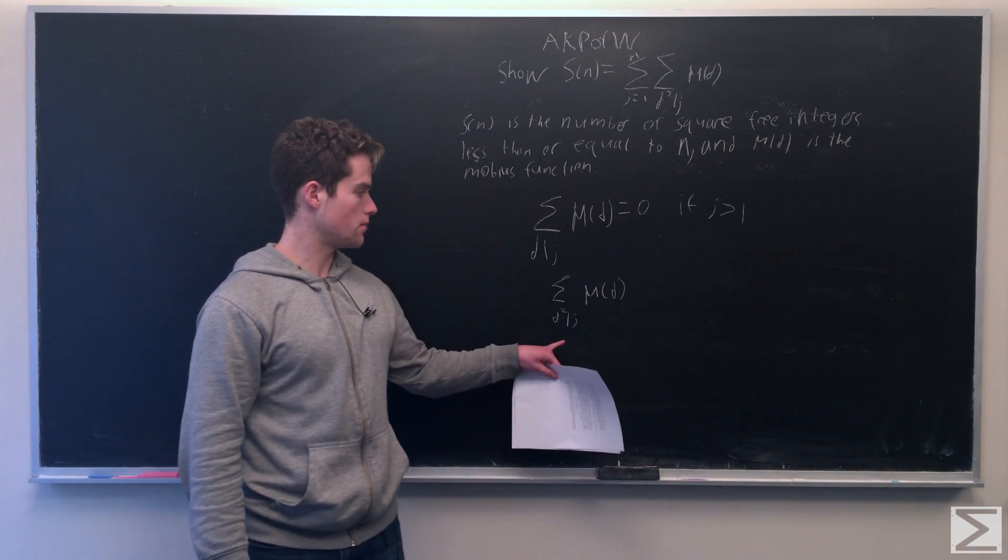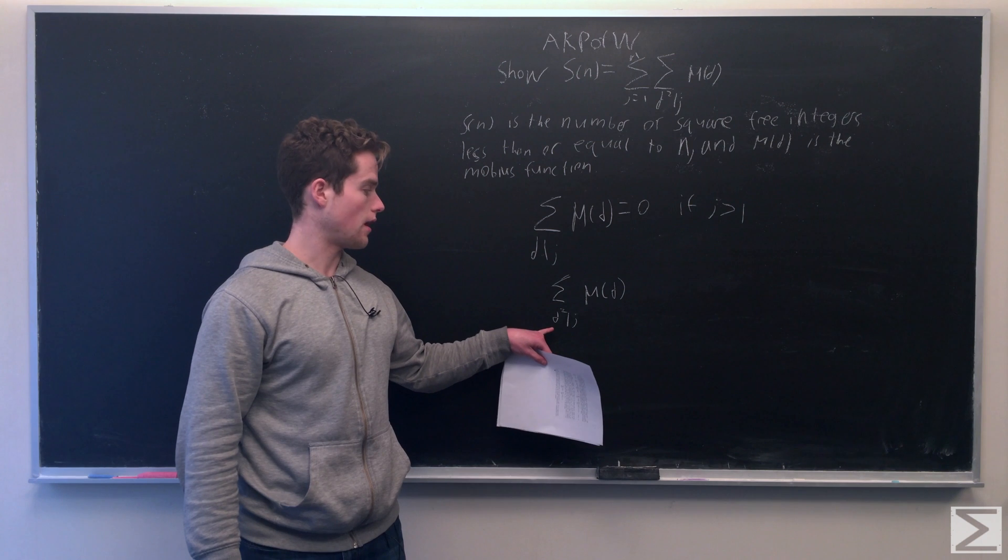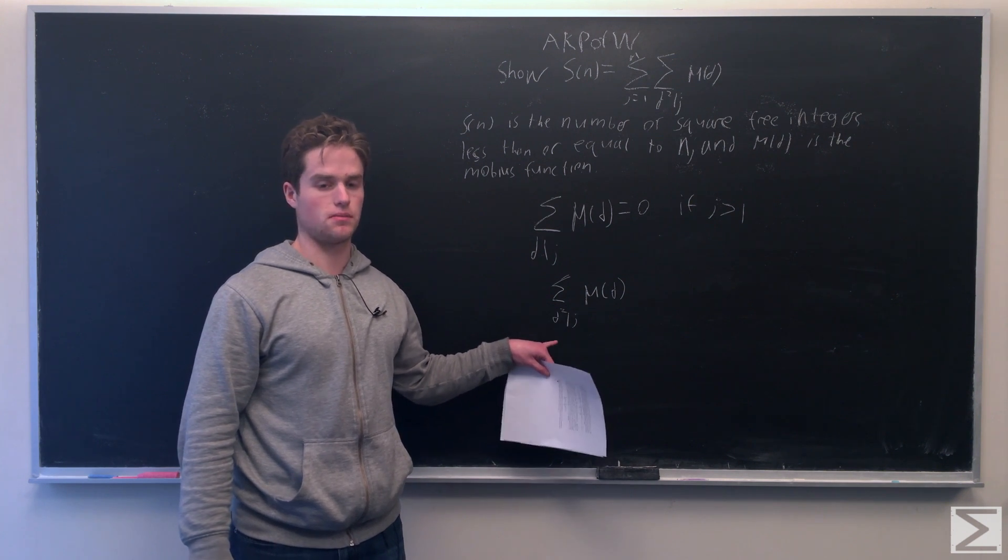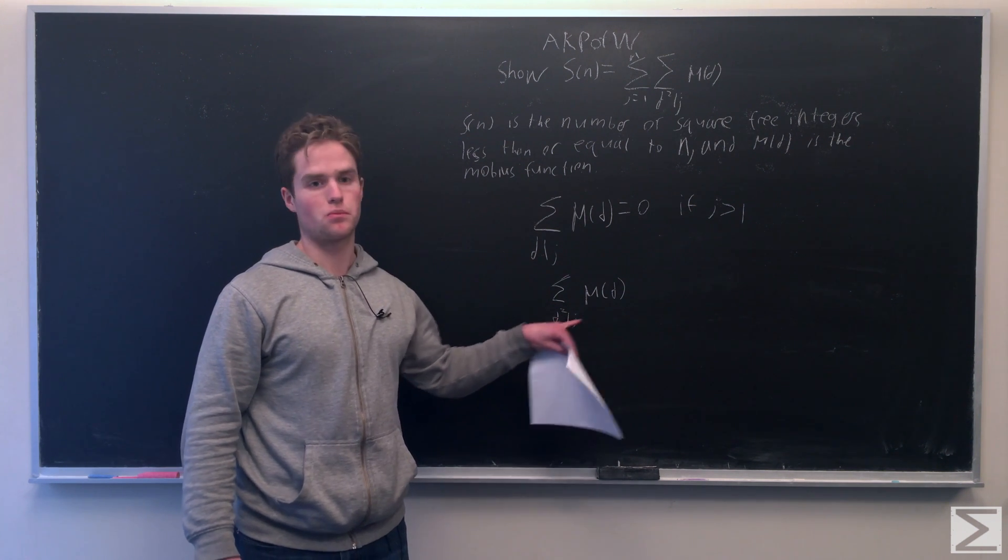So this sum, if j is square-free, the only d squared that divides j is d equals 1. So this will equal 1.